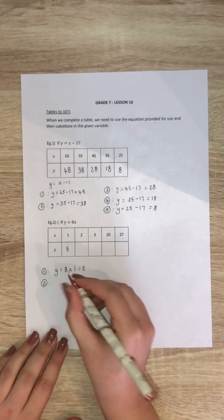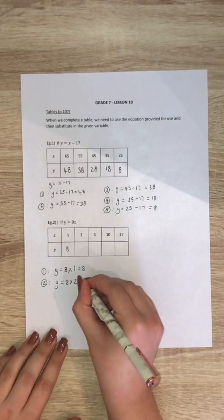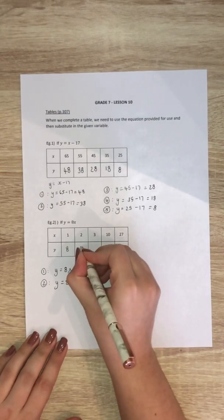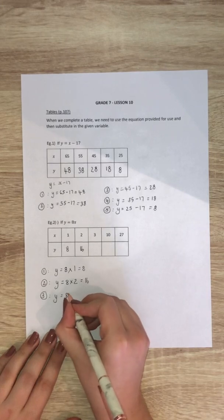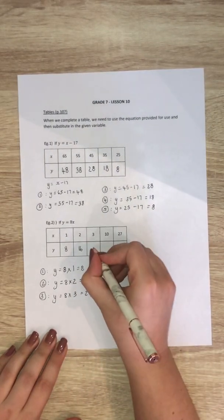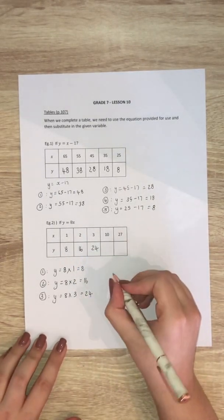Then the second one, same formula y equals 8x but now x is equal to 2. So 8 times 2 is 16. Then my third one y equals 8 times 3, 8 times 3 is 24. And you're going to keep doing the same thing. Then we go to the fourth one.